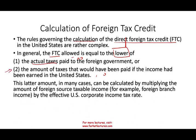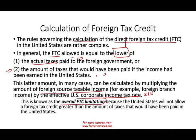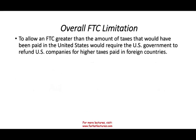The amount of taxes that you would have paid can be computed by multiplying the amount of foreign source taxable income by the U.S. corporate rate of 21 percent. This is known as the overall foreign tax credit limitation. Simply put, the U.S. will not allow a foreign tax credit greater than the amount of taxes that would have been paid in the U.S. You can pay more taxes overseas, but they will not give you credit beyond what you would have owed in the U.S.